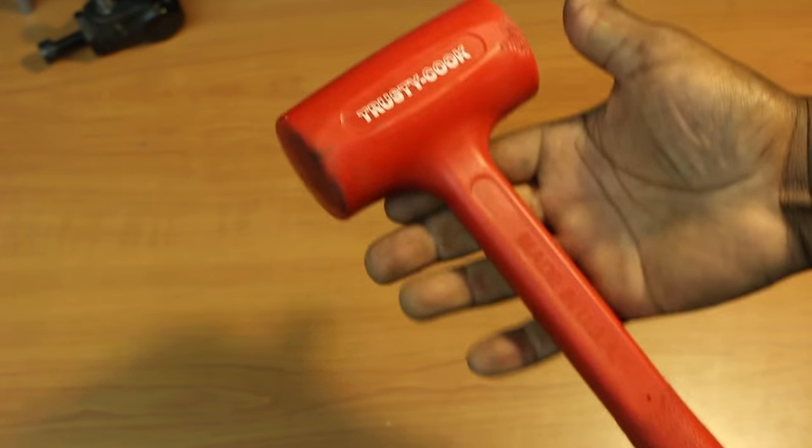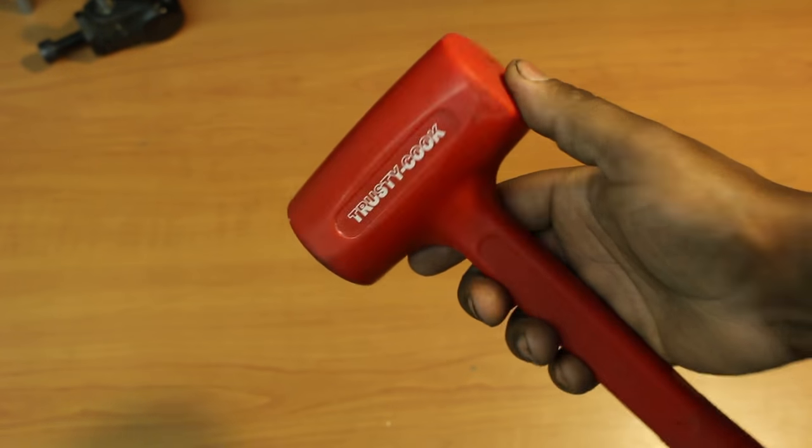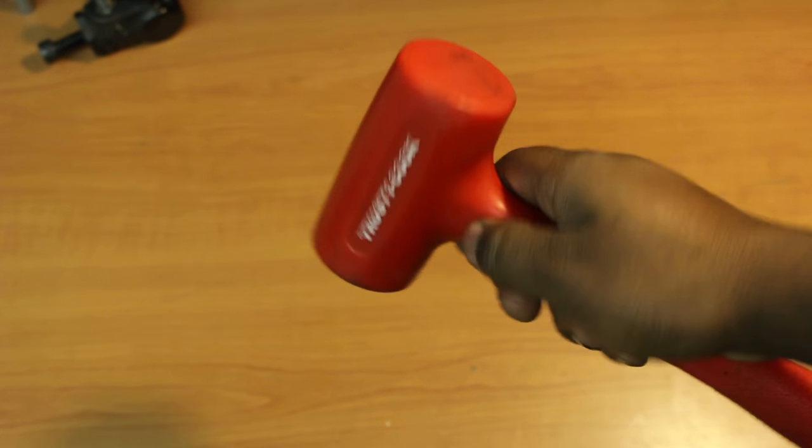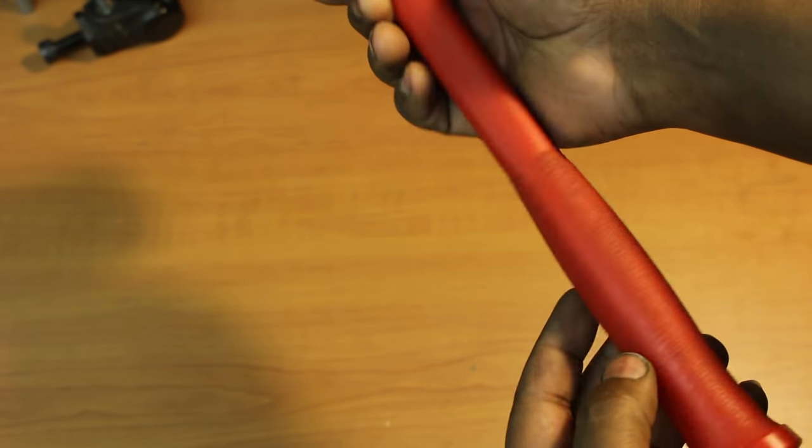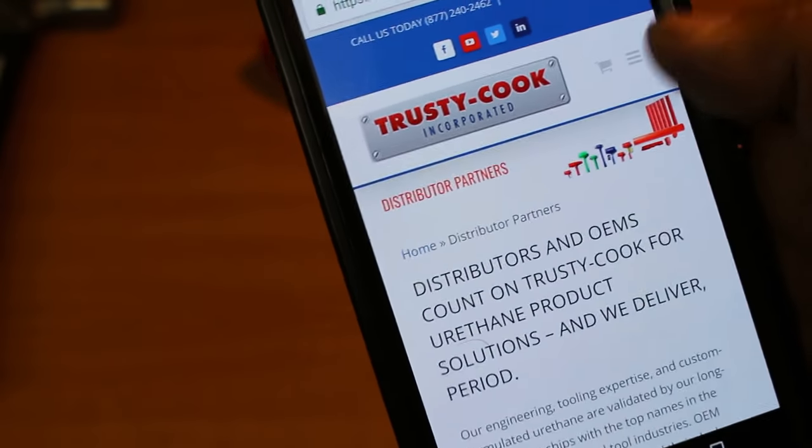So if you see one of those brands like the Cornwell hammer you just seen Justin Dow just picked up, if it has a handle like this, pretty much that's going to be from Trusty Cook. Just so you guys know, I'm telling you the truth.